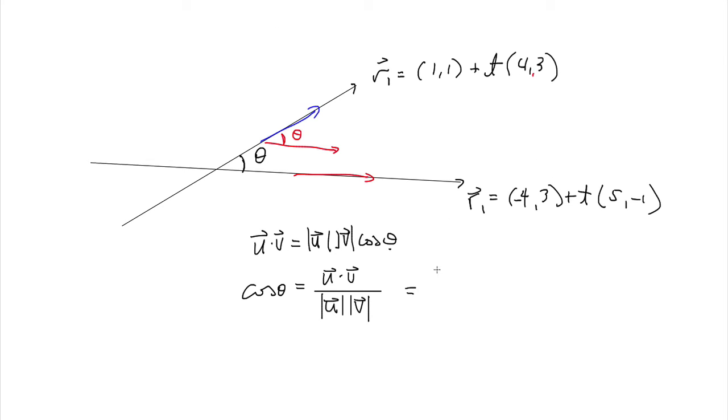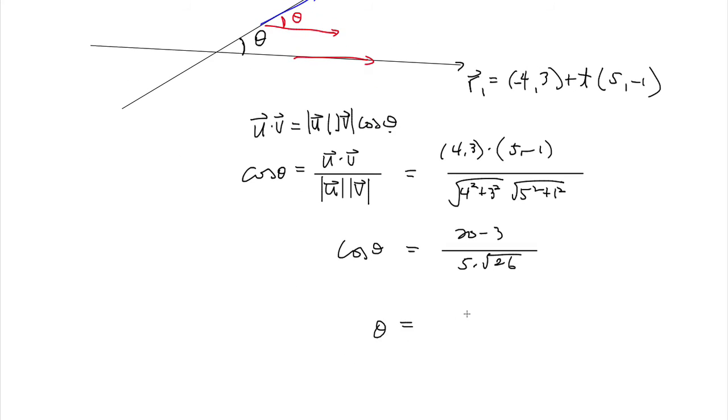So u in this case is, let's say, 4, 3. v is 5, negative 1. So this is going to be 4 squared, 3 squared. We don't need to care about the negative because we're squaring everything anyways. 5 squared, 1 squared. That product, 4 times 5 is 20, minus 3. This is 5 times by root of 26. So we need a calculator for this. 46.2 degrees accurate to one decimal place.